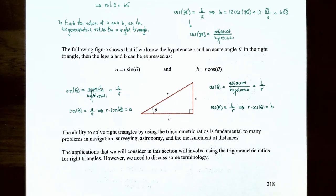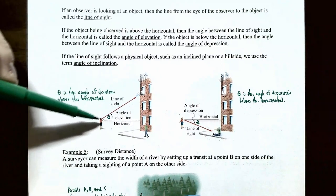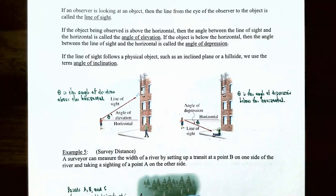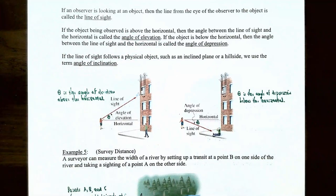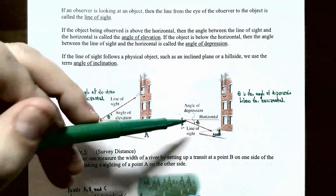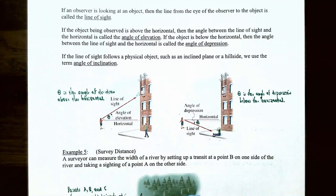We're also going to discuss some terminology. The line from the eye of an observer to an object is called the line of sight. If the object is above the horizontal, the angle between the line of sight and the horizontal is called the angle of elevation. If the object is below the horizontal, that angle is called the angle of depression. If the line of sight follows a physical object such as an inclined plane or hillside, we use the term angle of inclination.